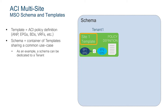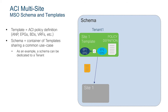For example, I have a site one template which is associated to tenant one. Once I define my policies in the template, those policies have not been provisioned or rendered in any fabric yet. I need to associate the template to one or more sites. In this case, I associate the site one template with fabric one, site one. Once I do that, I have the capability of deploying the template. When I push the deploy button on MSO, the policy defined in the template will be pushed to the ACI domain controlling site one and will become an effective — rendered — policy at the ACI level.